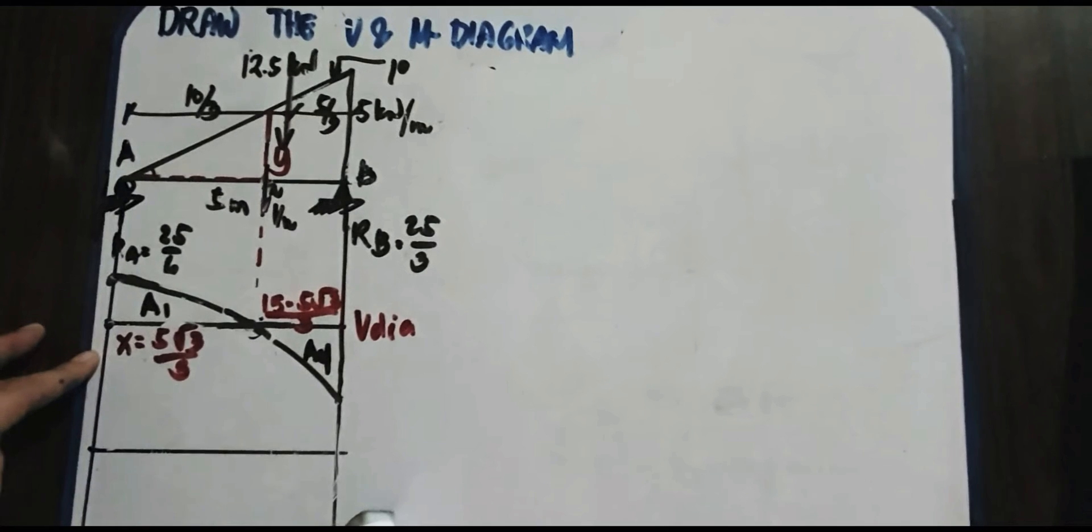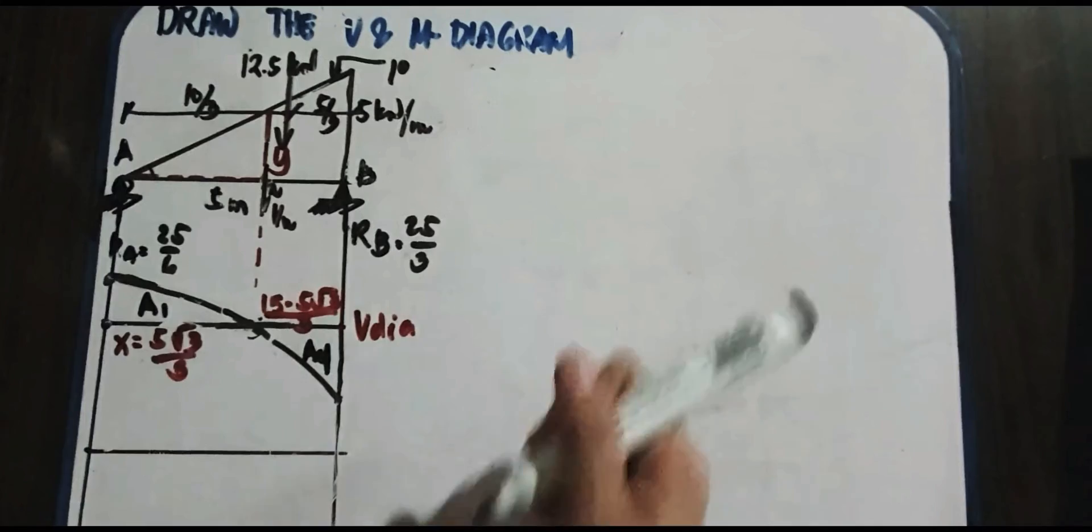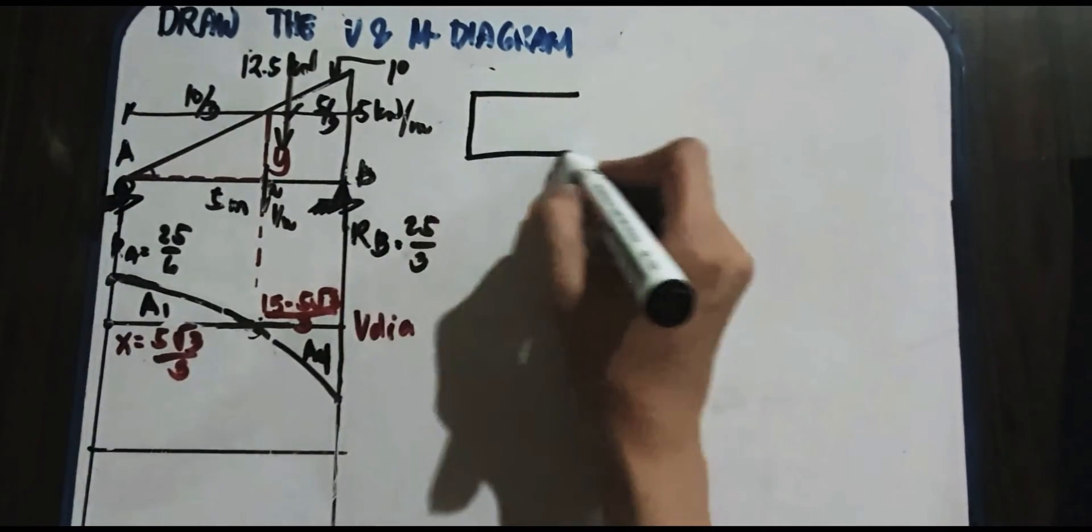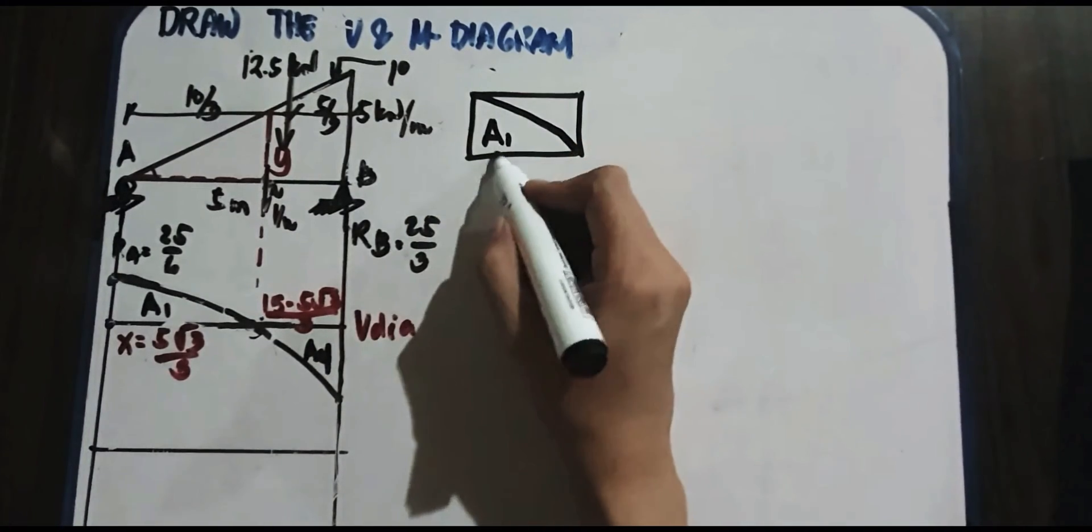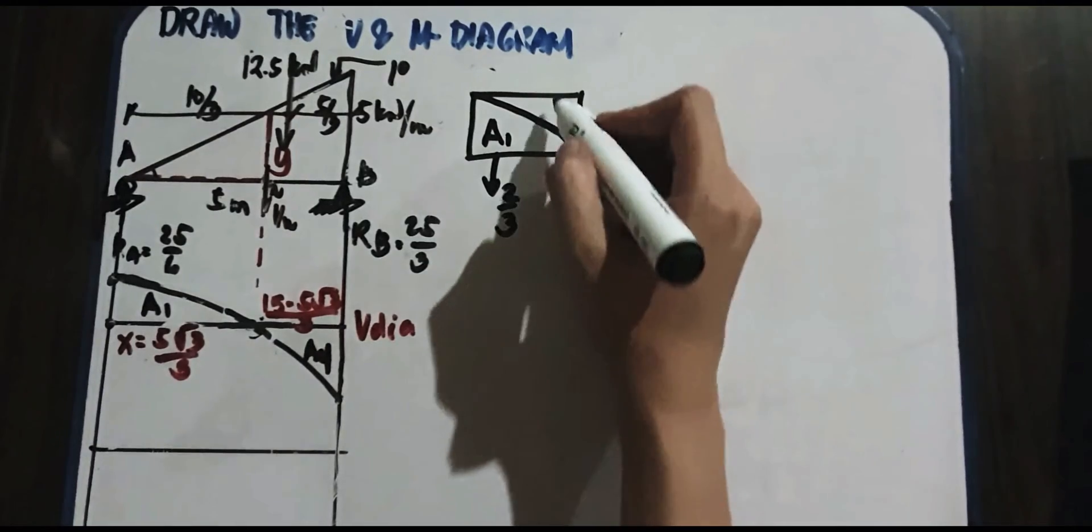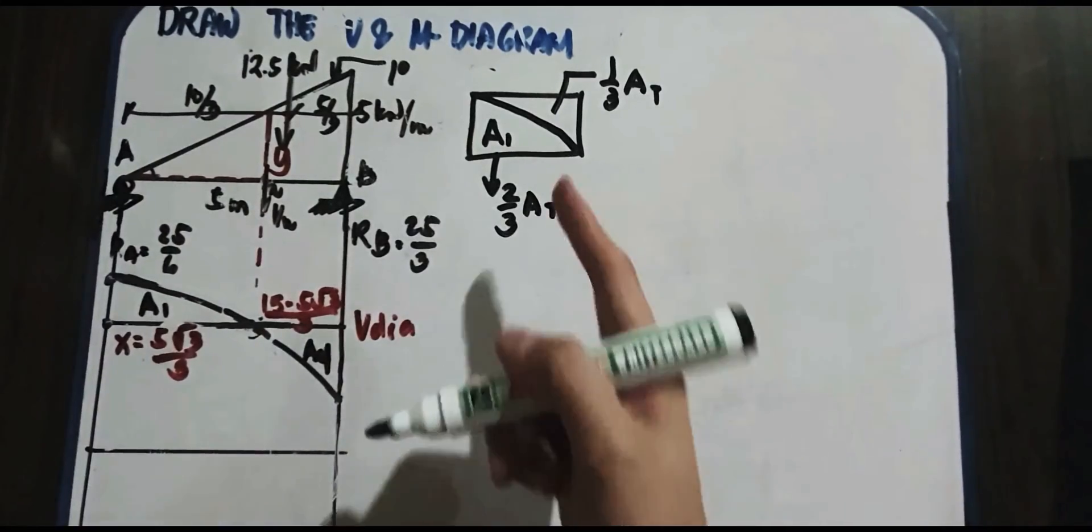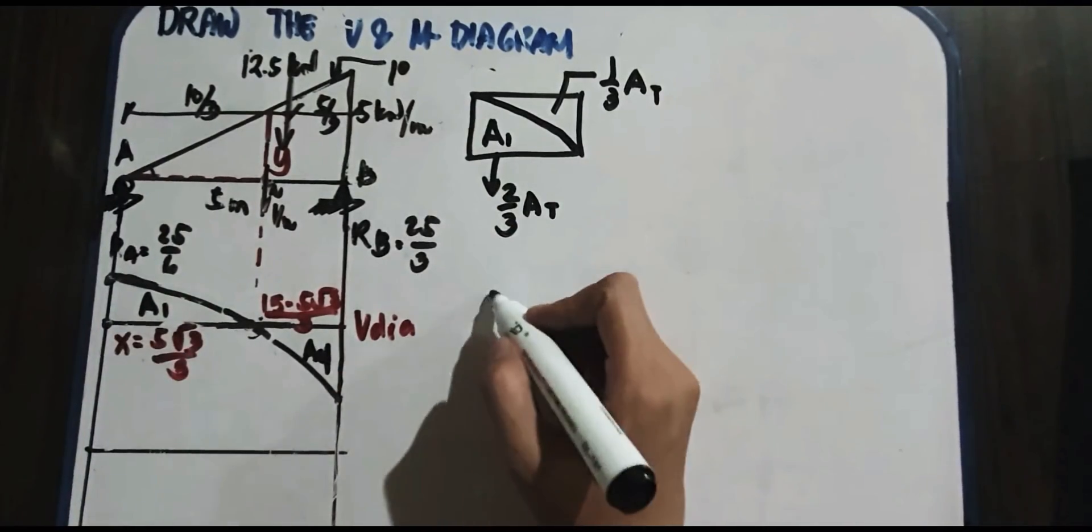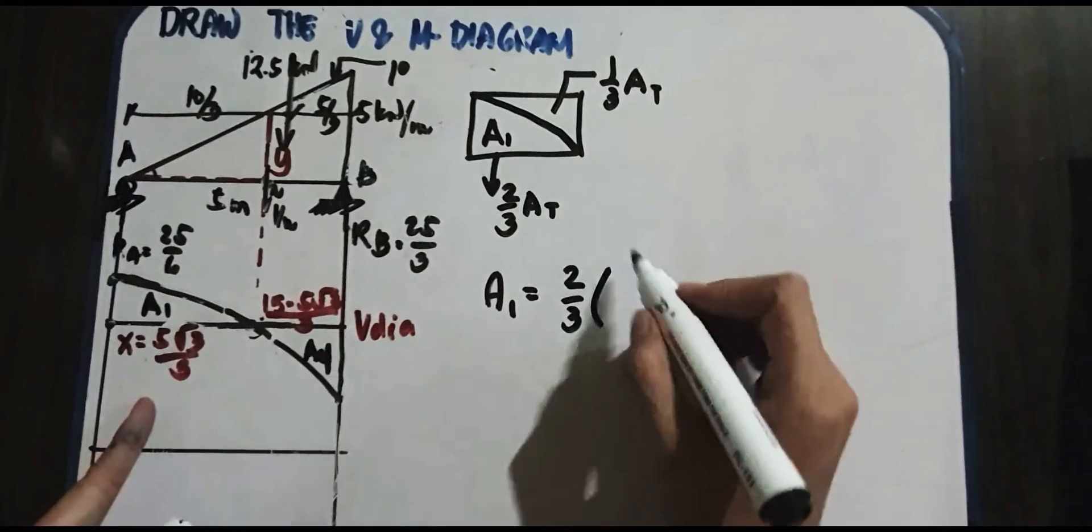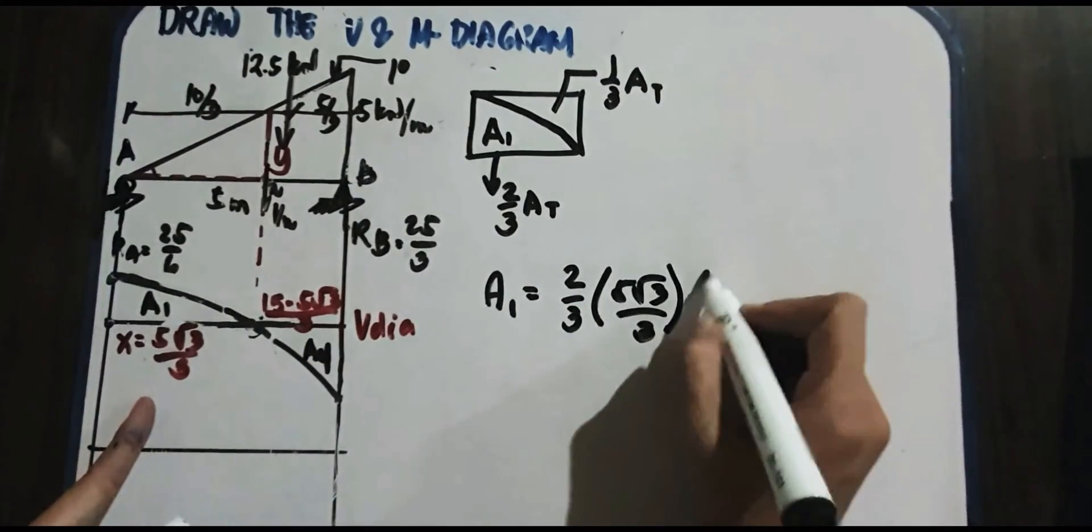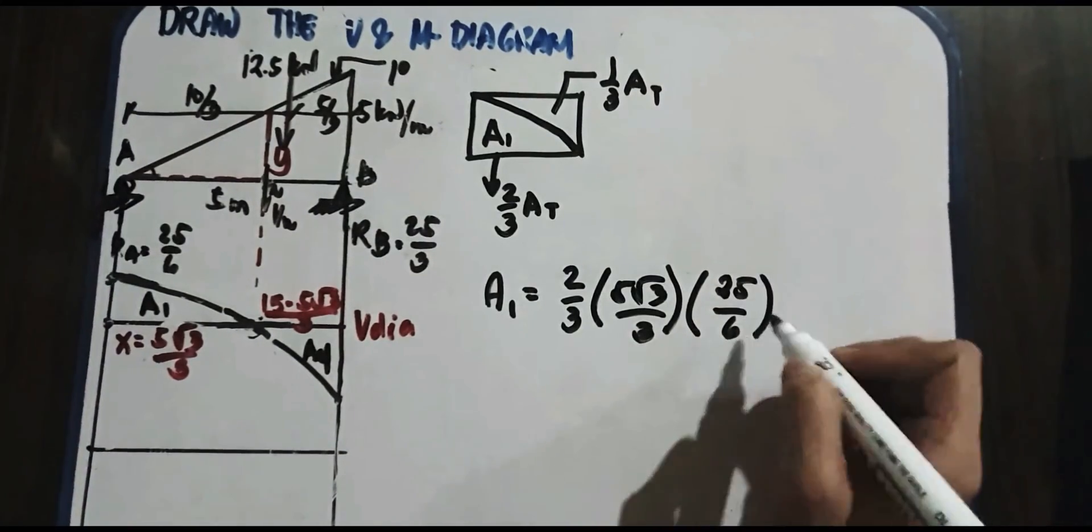So since ito yung shear diagram natin, ito na yung gagamitin natin. Pero saan po sa moment natin? Alam naman natin yung area 1, that is 2 third. Diba? Bakit daging 2 third? Kasi alam natin ito on our previous topic, our previous subject, we have here this area to be your 2 third of the area. And this one naman is 1 third of your area. So anong ibig sabihin yan? Dito po, ang pag-compute is more an area. So how do we compute for A1? A1 is, that is 2 third multiplied by the base, which is 5 square root of 3 over 3. And then multiply natin yung height nito, which is 25 over 6. What is your area 1?